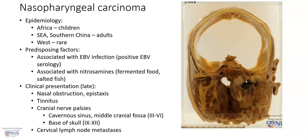It can also block the eustachian tube, which is very nearby, giving rise to tinnitus. And invasion into the base of the skull or the points of exit of the cranial nerves can give rise to cranial nerve palsies — for example, third to sixth nerve palsies if it involves the region of the middle cranial fossa as well as the cavernous sinus, and at the base of the skull the exit points of cranial nerves 9 to 12.